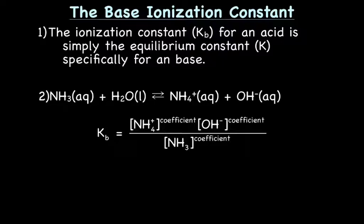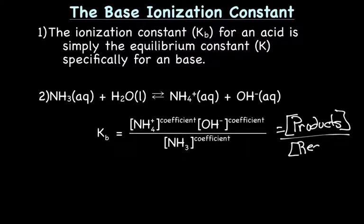Okay, so we're going to be calculating Kb because we know NH3 is a base. So the Kb equation is Kb equals concentration of NH4+ times concentration of OH- to the coefficients, which is concentration of the products divided by concentration of NH3, which is concentration of the reactants.